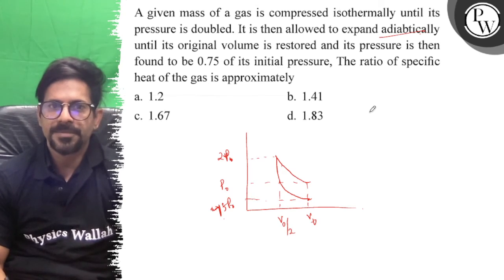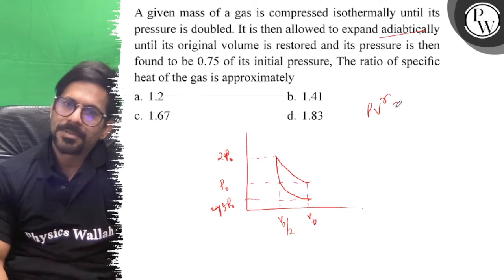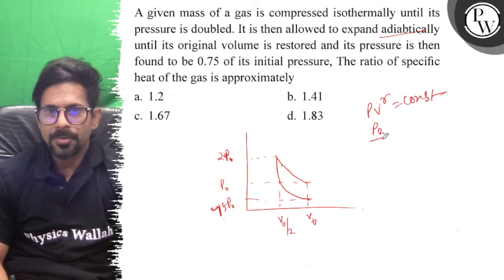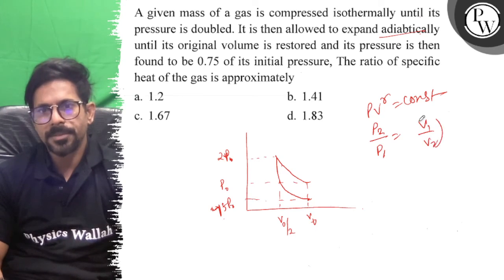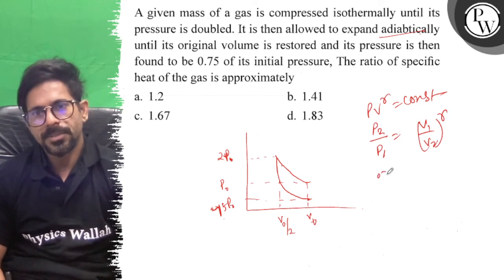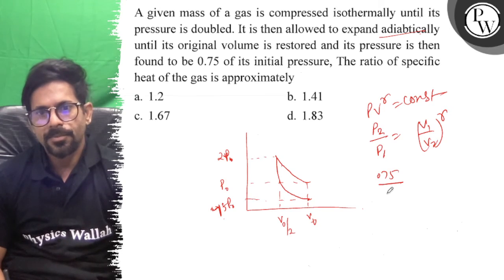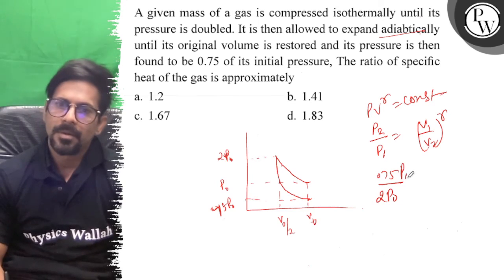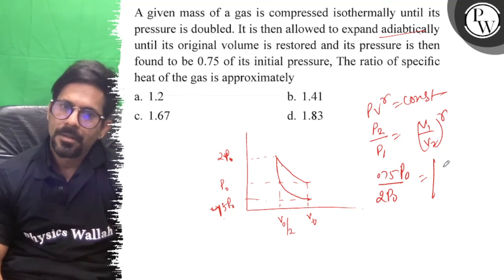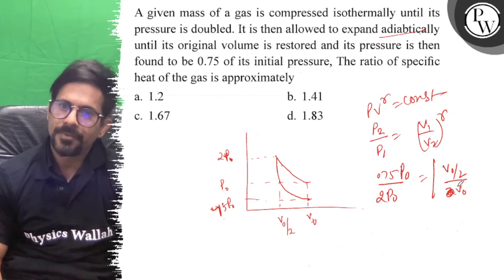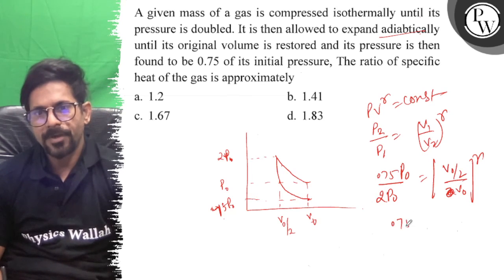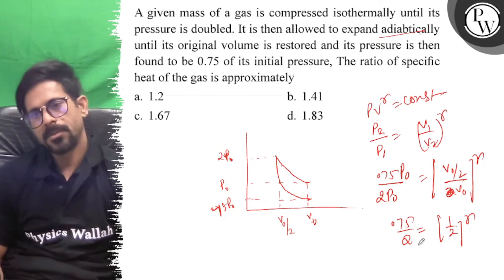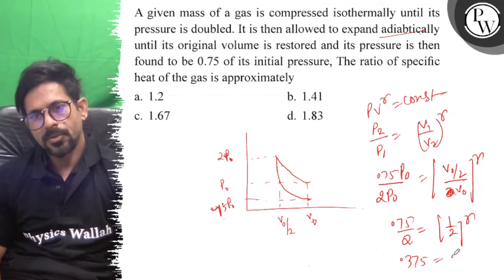The ratio of specific heats gamma is what we need to find. For an adiabatic process, PV^γ = constant. So P2/P1 = (V1/V2)^γ. Here P2 equals 0.75 P1, and substituting the volumes gives us 0.75 = (0.5)^γ.